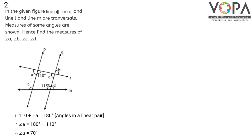The 110-degree angle and angle A form a linear pair, so their sum is 180 degrees. Taking 110 to the right-hand side, angle A is equal to 180 minus 110, which equals 70 degrees.